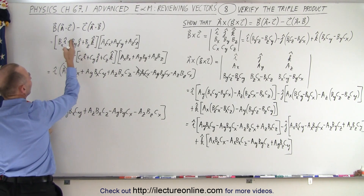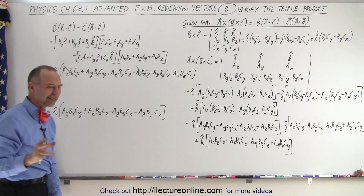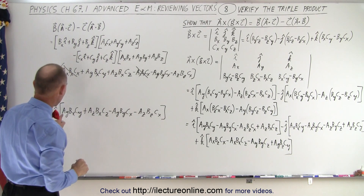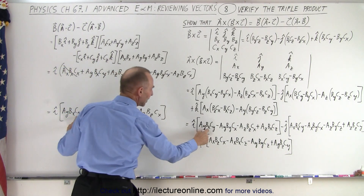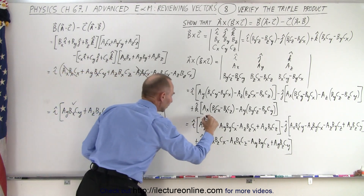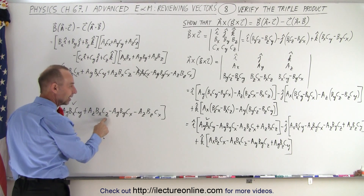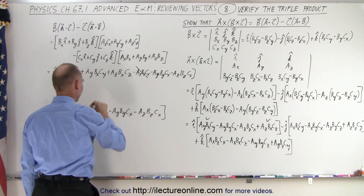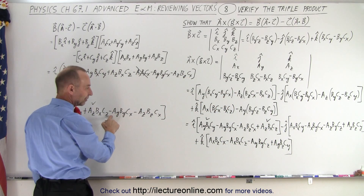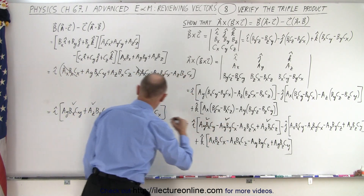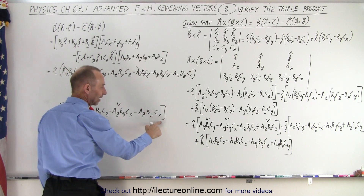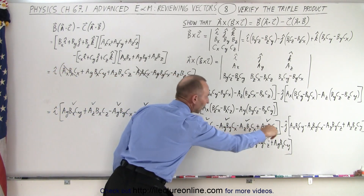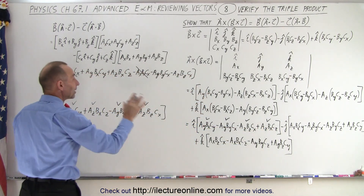Checking these terms against the left side I component: AY·BX·CY matches, AZ·BX·CZ matches, minus AY·BY·CX matches, and minus AZ·BZ·CX matches. All four terms are verified. This confirms that the I component on the left side equals the I component on the right side.